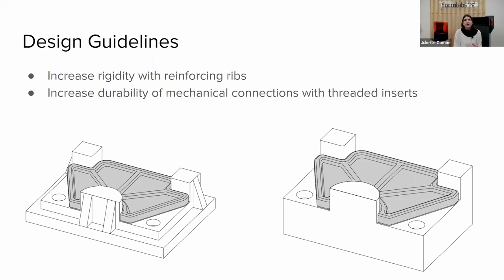Another recommendation: increase rigidity. The typical way to increase stiffness of a machined feature is to leave extra material in locations prone to bending and loading. In additive manufacturing, it's a bit different — we try to minimize material consumption to keep parts cost low and increase the speed of the printing process. So it helps to use reinforcing ribs, as you can see in the illustration on the left, to increase rigidity. Also, for tapped holes: rather than relying on 3D printed threads, you can increase durability of mechanical connections by using threaded inserts.